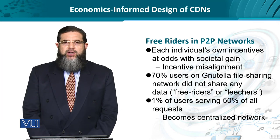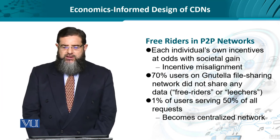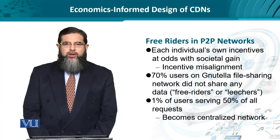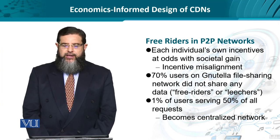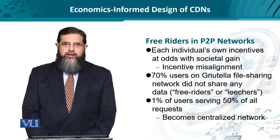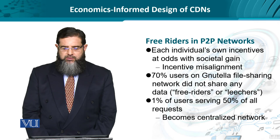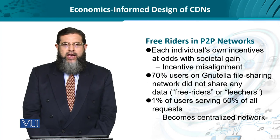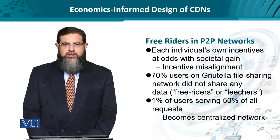Coming to the networks paradigm, the same issue arises where each individual's incentives or selfish interests are at odds with societal gain. This can be termed an optimization problem or an incentive misalignment issue. For example, research found that 70% of Nutella file sharing system users were leeches or free riders — they contributed no data to the network — and as little as 1% of the Nutella file sharing community was serving 50% of all requests.